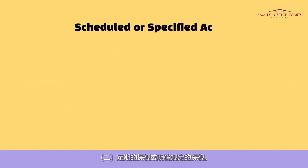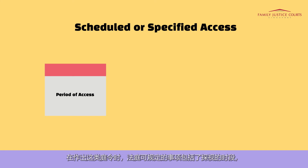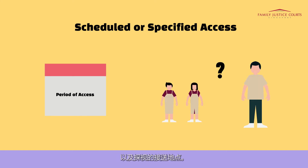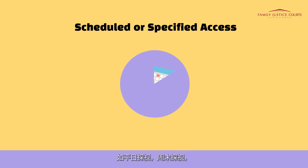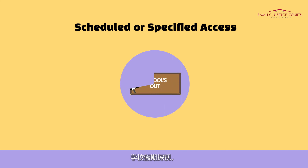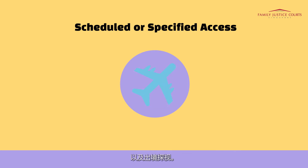The second category is scheduled or specified access, where the court makes specific orders on when and how access will take place. When making such orders, the court may also specify, among other things, the period of access and where the handover would take place. Scheduled or specified access orders could deal with, among other things, weekday access, weekend access, overnight access, school holiday access, public holiday access, access during special occasions, and overseas access.